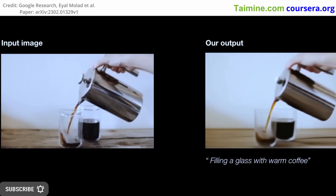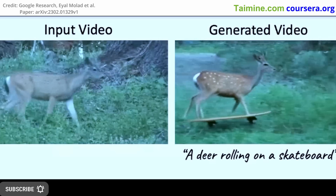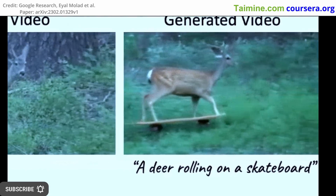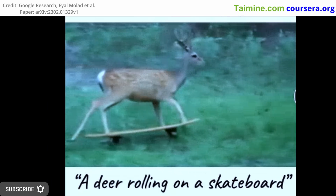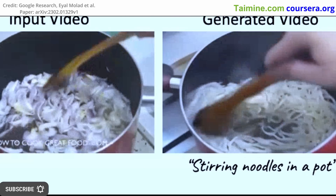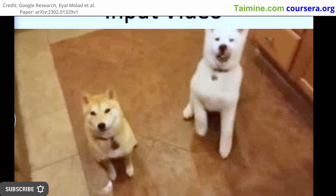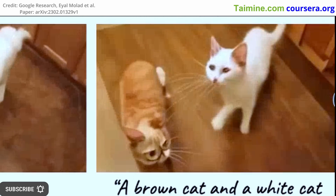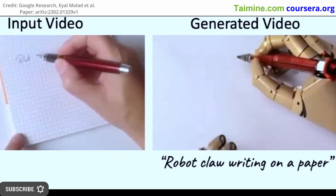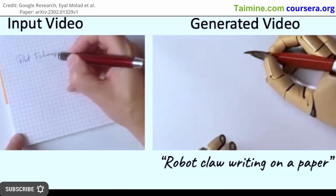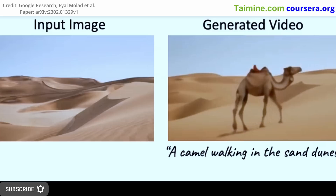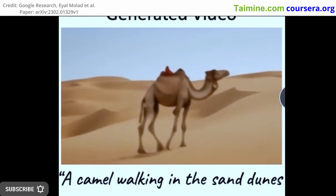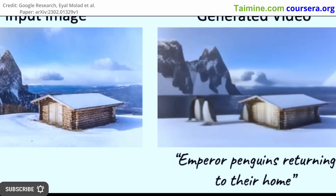The Dreamix AI employs a video diffusion model to merge low-resolution spatiotemporal data from the source video with high-resolution synthesized information aligning with the text prompt during the inference stage. As stated by Google, retaining some high-resolution information from the original video is necessary for achieving high-fidelity output. To address this, the model goes through a preliminary stage of fine-tuning on the source video, which significantly enhances the fidelity of the final output.